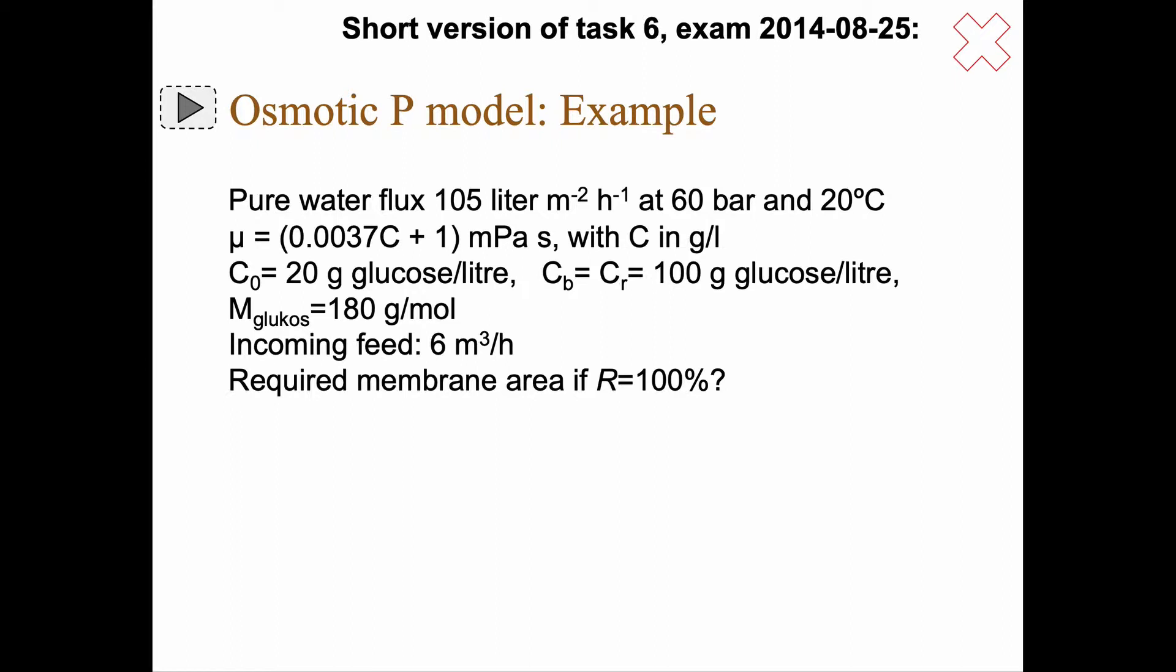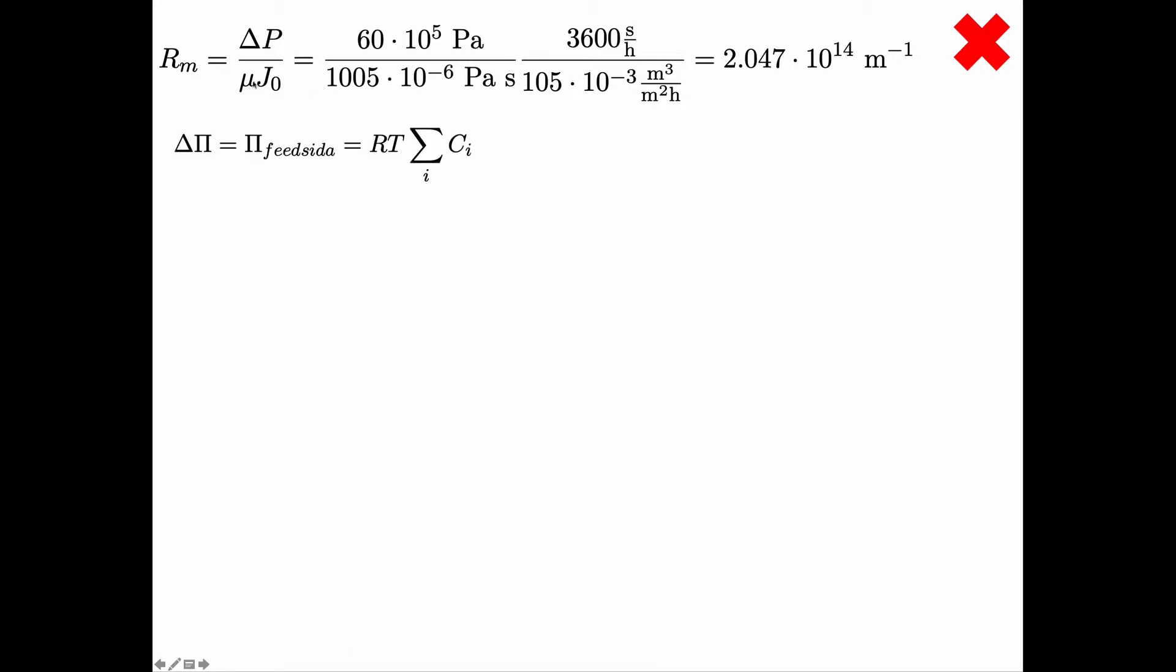Let's go through this. The first thing is to determine the membrane resistance and we do that with the clean water flux. When we have pure water, nothing in it, the delta P there was 60 bars so 60 times 10 to the power 5 pascal, now changing the unit to SI units.